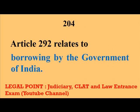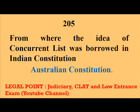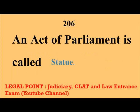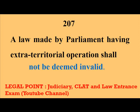Article 292 relates to borrowing by the Government of India. The idea of the Concurrent List was borrowed in the Indian Constitution from the Australian Constitution. An Act of Parliament is called a Statute. A law made by Parliament having extraterritorial operation shall not be deemed invalid.